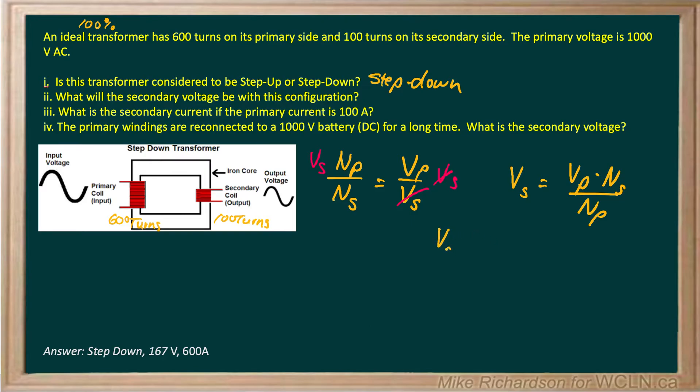So my secondary voltage is my primary voltage which in this case is 1000 volts AC. It has to be AC for a transformer to work. My secondary number of windings is 100 turns. And my primary number of windings was 600 turns. So you can see that my voltage will have dropped by a factor of 6. And you end up getting a secondary voltage of 167 volts AC.